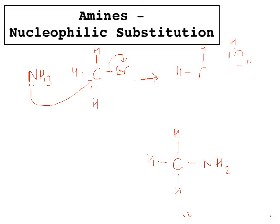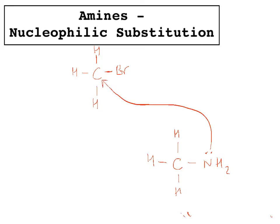What can then happen is this CH3NH2 can attack another one of these original haloalkanes, this bromomethane. This amine has a lone pair which can again attack our original bromomethane. What will be made is an N with two H's on it, with one CH3 from the original group and another CH3 which has come from the bromomethane.